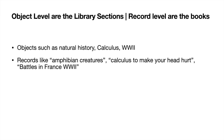Records in this library example — in natural history you'd see books like "Amphibian Creatures"; in calculus, something like "Calculus to Make Your Head Hurt"; in the World War Two section, you'd see things like "Battles in France in World War Two." In Salesforce, we would see records like on the opportunity, maybe a generator sale or software subscription. For leads, you'd see individual leads — people at a specific company you're going to be contacting. For accounts, you'd see companies like Ursa Major Solar.